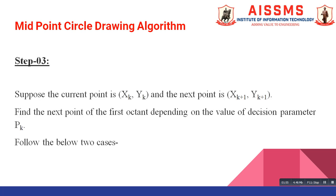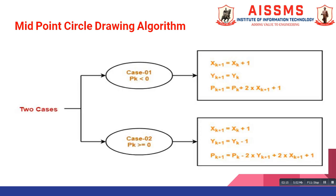Our next step is to suppose the current point coordinates as xk, yk and the next point to be plotted as xk+1, yk+1. We find the next point of the first octant depending upon the value of decision parameter pk. Based on the value of pk there are two cases: pk less than 0, and pk greater than or equal to 0.